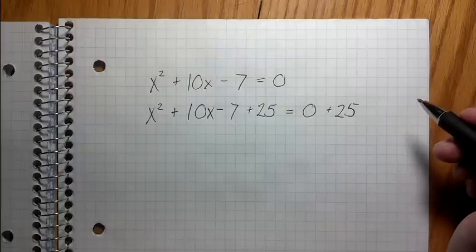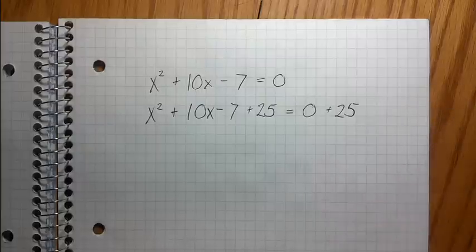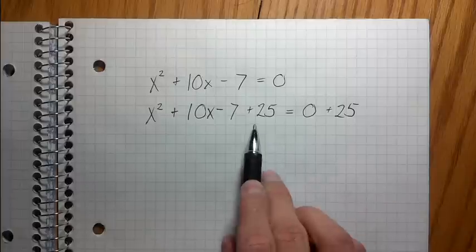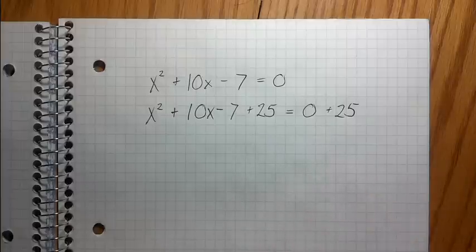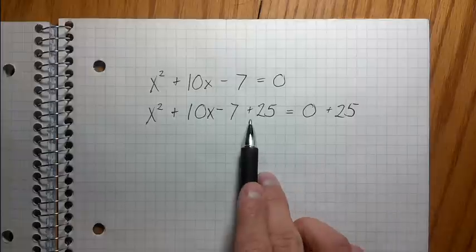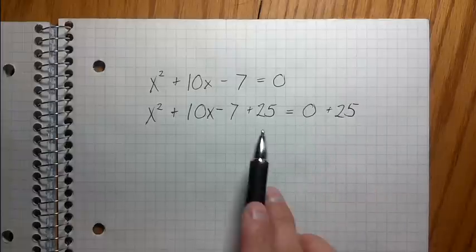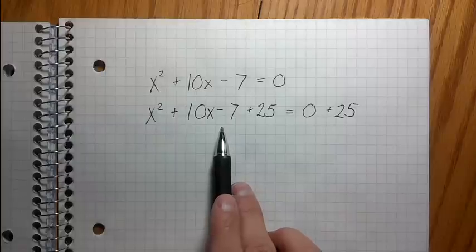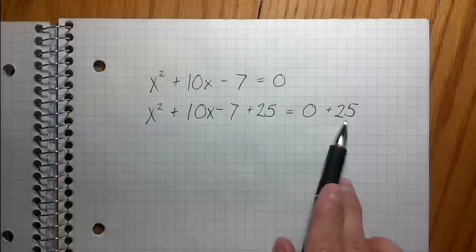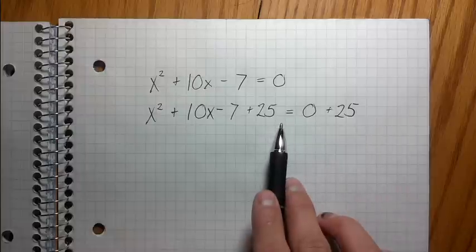Now, first of all, I wanna do a little side note here. Some of you might be thinking, what's with this adding numbers randomly, right? How can you get away with that? Aren't you changing the value? No, I'm not because I'm adding it to both sides. Remember, this is algebra, I can do the same thing to one side of the equation as I do to the other, right? I just added 25 to both sides, I didn't break any rules there.